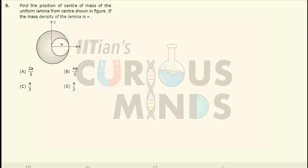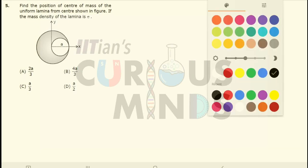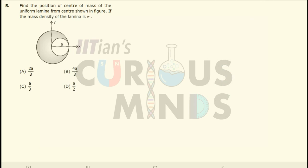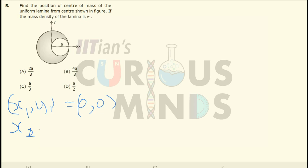Find the position of the center of mass of the system. From a larger circle of radius 2a, a smaller circle of radius a has been removed. The center of mass of the larger circle will be at x1, y1 equal to 0 comma 0, and of the smaller circle, x2, y2 will be equal to a comma 0.